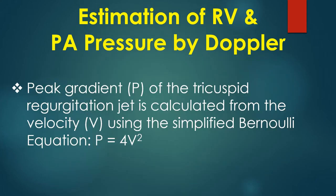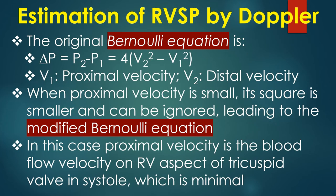Peak gradient of the tricuspid regurgitation jet is calculated from the velocity using the simplified Bernoulli equation: P = 4V². The original Bernoulli equation is ΔP = P2 − P1 = 4(V2² − V1²).